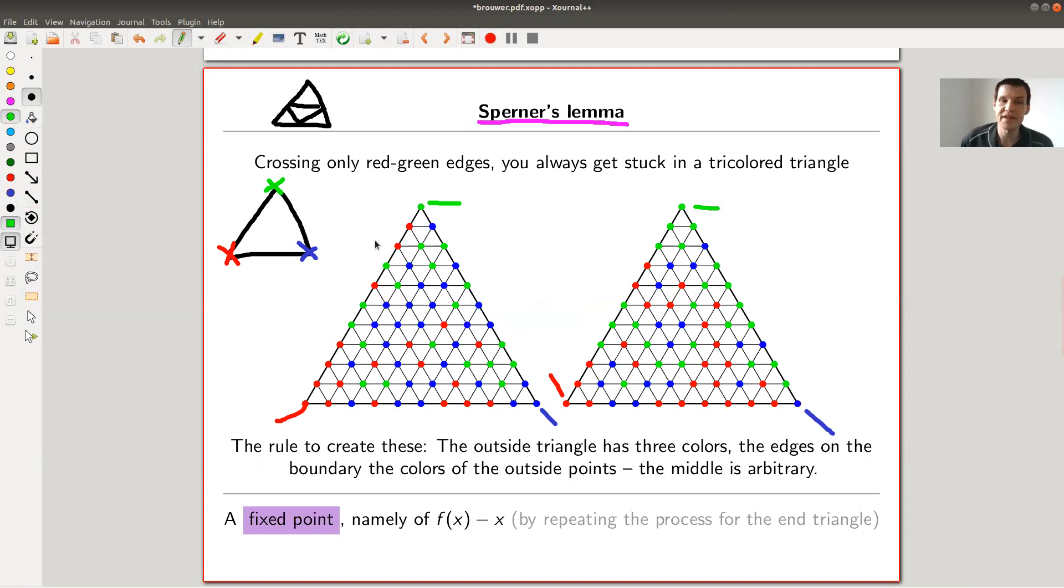And you color your edges with those colors, your vertices with those colors, using only two rules. The outside triangle is tricolored. Tricolored means exactly this thing here, so it has any color appear. Middle triangles can be arbitrary. So here you, for example, have a red, red, green triangle. Middle colors can be arbitrary. Middle triangles can be arbitrary, but the outside one is tricolored.